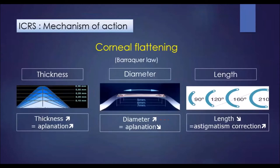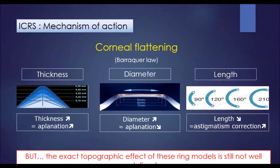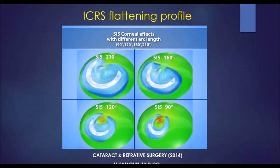Let's start with some basics. Intracorneal ring segments provide corneal flattening, but the exact topographic effect of these ring models is still not well defined. With long rings like 210 degrees, we have a large surface of flattening with a spherical effect, and with shorter ones we have flattening in one axis and some steepening in the opposite axis, giving a cylindrical effect.